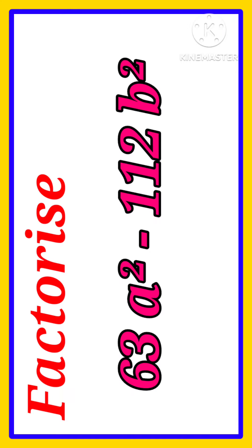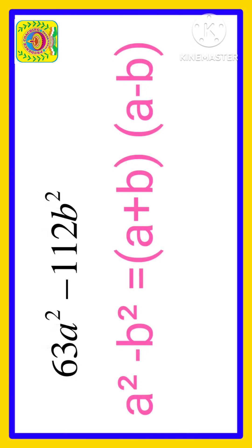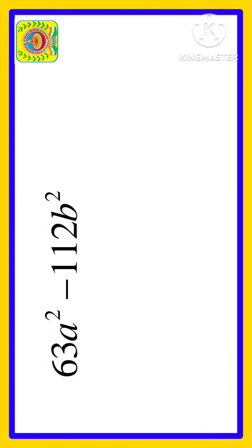Here you are asked to factorize 63a² - 112b². By seeing a² and b² and also minus, you may think we can apply a² - b². Yes, you are correct, but before that you need to do some adjustment because 63 and 112 are not perfect squares.